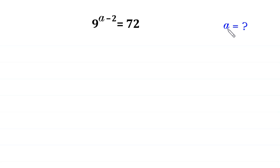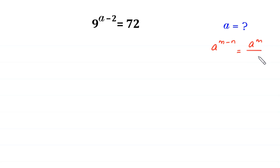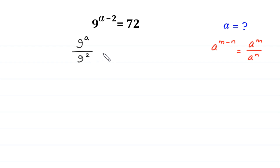So, let's start by using the power rule: a to the power m minus n is equal to a to the power m divided by a to the power n. This means 9 to the power a minus 2 becomes 9 to the power a divided by 9 squared, which is equal to 72.